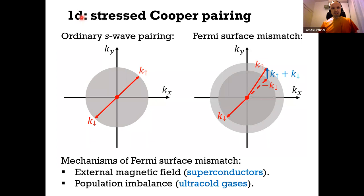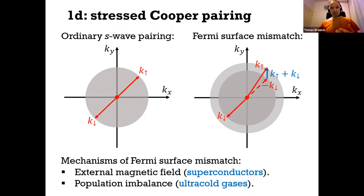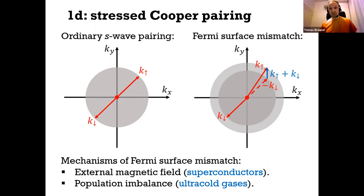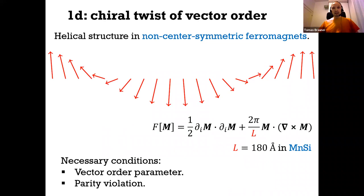Let me give a quick review of generic known mechanisms for inhomogeneity in quantum many-body systems. The first is 1D modulation. Consider BCS theory of superconductivity: in the simplest case you have two spin polarizations of electrons paired with total momentum zero — ordinary s-wave pairing, which is uniform. A way to get non-uniformity is if you pair two types of fermions with unequal Fermi surfaces, because then it's energetically favorable to pair fermions on their respective Fermi surfaces.